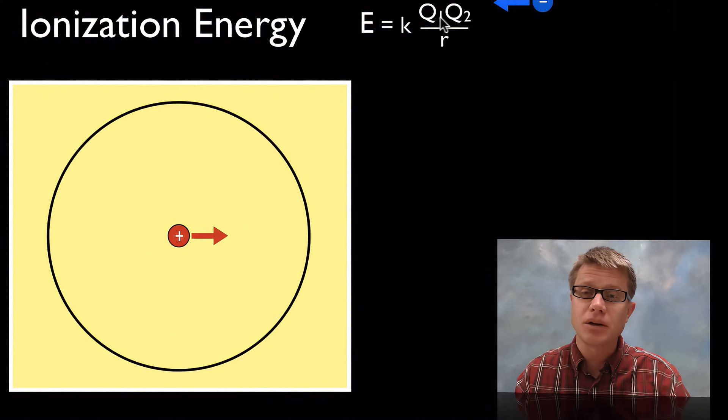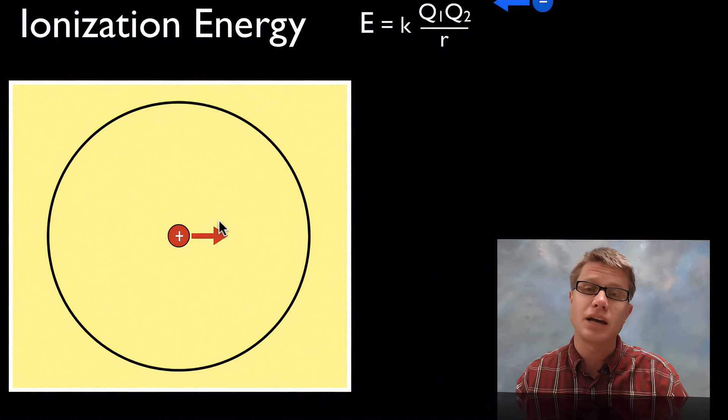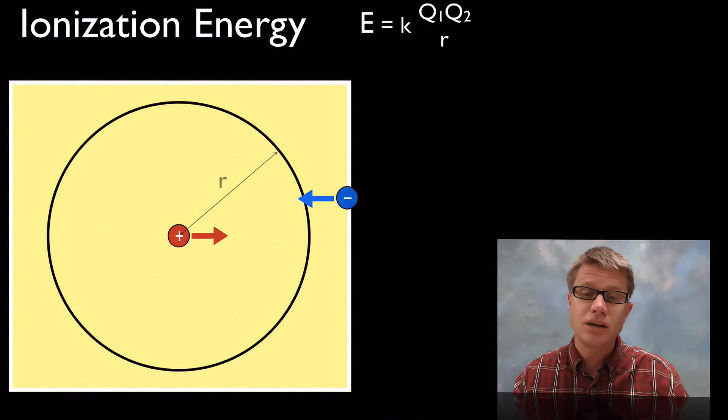How do we figure it out? You're simply going to multiply the two charges. So let's say the proton has a positive charge. Let's call that plus 1. And the electron has a negative charge. Let's call that negative 1. And the only other thing we really need is the radius. The distance between the two.